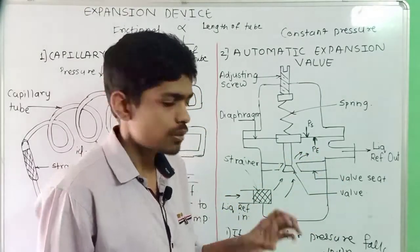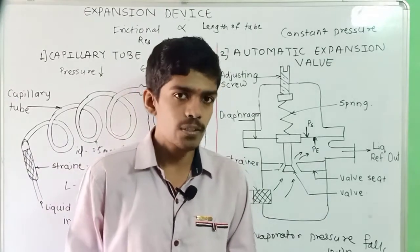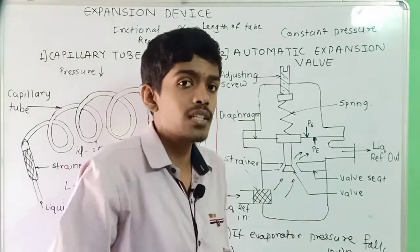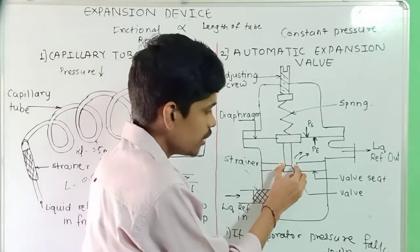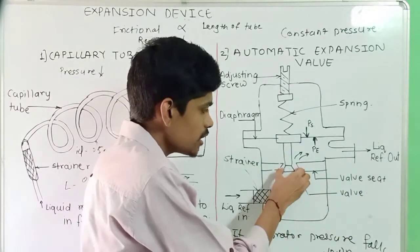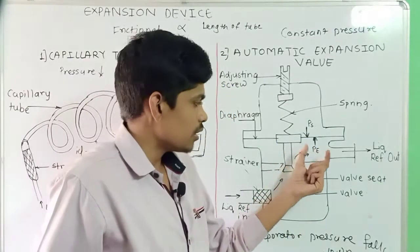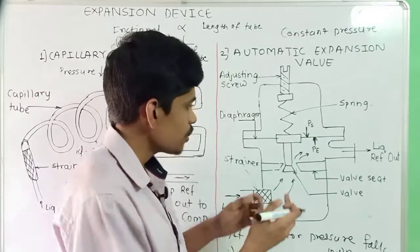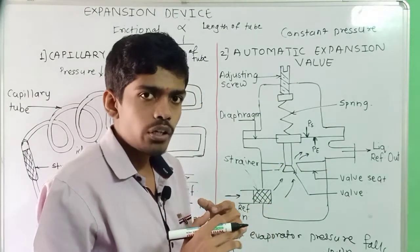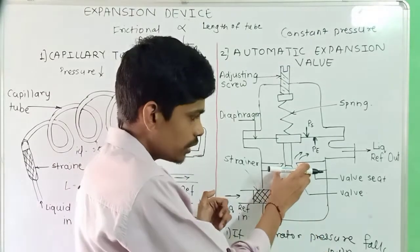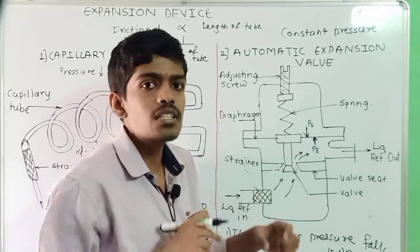The second condition is that if the evaporator pressure increases — when evaporator pressure exceeds spring pressure, the spring will contract and the valve will close. The valve will sit on the valve seat and get closed. Whatever area through which the liquid refrigerant was entering will be stopped. When the evaporator pressure increases, the spring contracts, the valve moves up and gets closed, stopping the flow of liquid refrigerant.